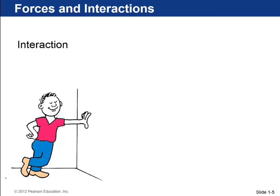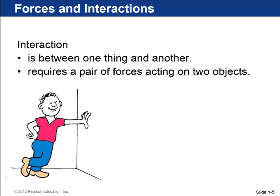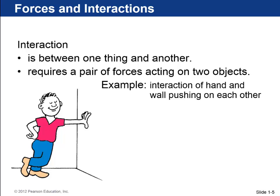Next we're on to Newton's third law. An interaction is between one thing and another. It always requires a pair of forces acting on two different objects. For example, the hand is pushing on the wall, so the wall is pushing on the hand. That's an interaction between the wall and the hand.